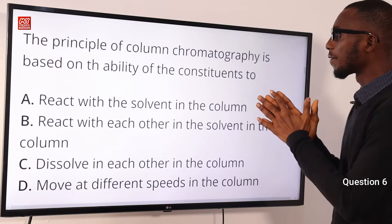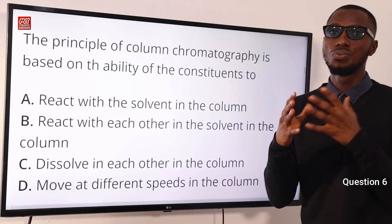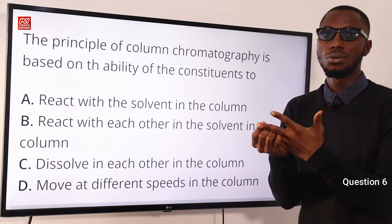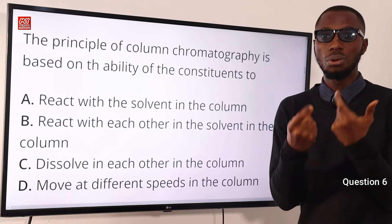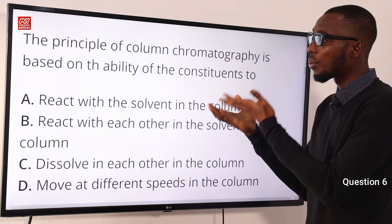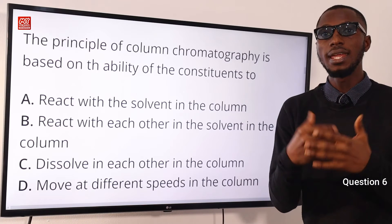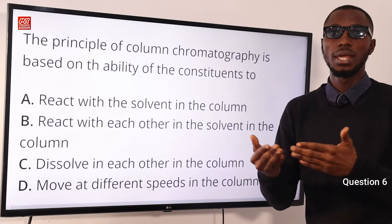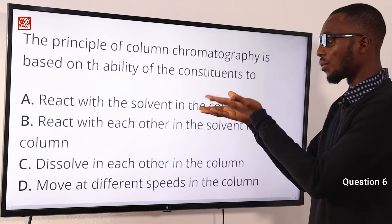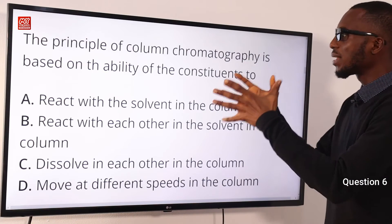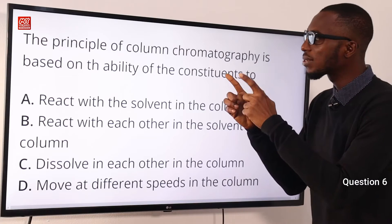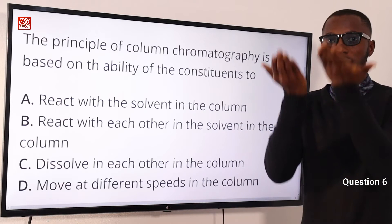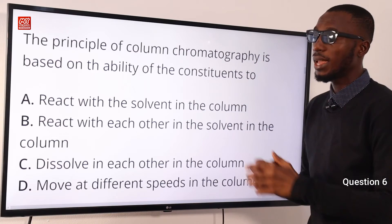Question 6. The principle of column chromatography is based on the ability of the constituents to do what? In chromatography, we are talking about two things: absorption and dissolution — how well the paper absorbs the constituents and how well the constituents dissolve in the solvent. If the constituent is well dissolved in the solvent, it moves up faster along with the solvent in the column. So option A is the correct option.